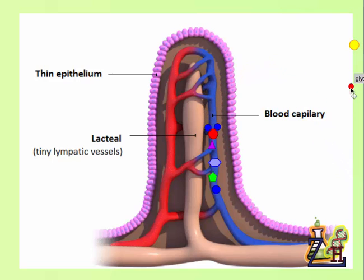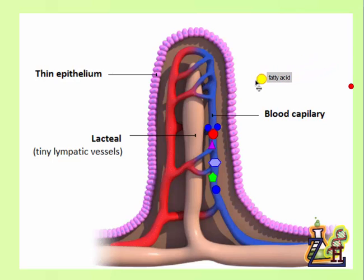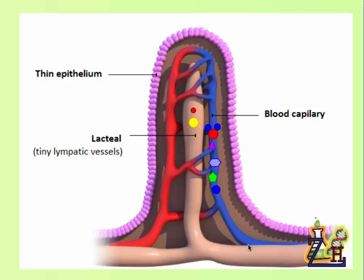We are left with fatty acids and glycerol. Due to their fatty nature, they are hydrophobic — they don't mix well with water. That is why they are absorbed not into the blood capillary but into the lymph vessels or lacteals. The fatty acids and glycerol are absorbed into the lymph vessel. Later in the body, at the large arteries of the neck, the fatty acids and glycerol join the other nutrients in the blood and leave the lymph vessel.